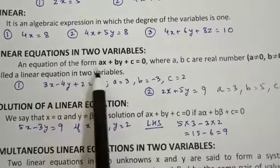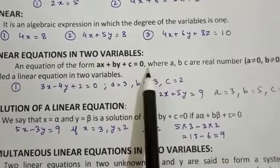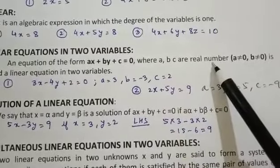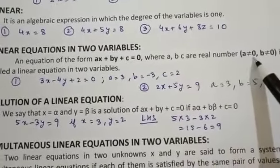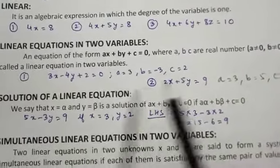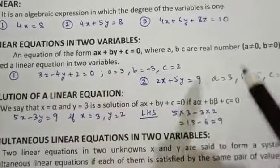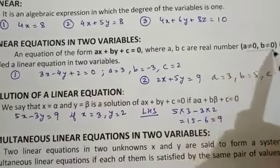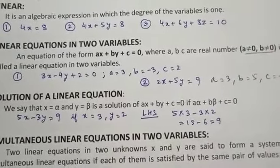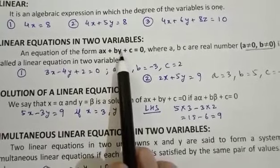So the equation of the form ax plus by plus c equal to 0, where a, b, c are real numbers, a not equal to 0, b not equal to 0, is called a linear equation in two variables. Now in this, a not equal to 0 and b not equal to 0 is a very important condition — that the coefficient of x and y should not be absent.